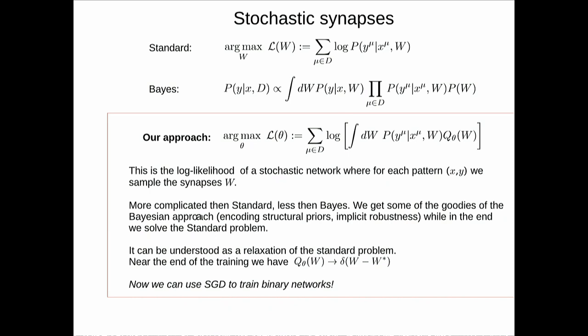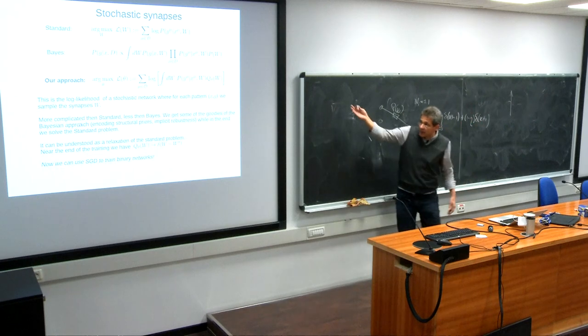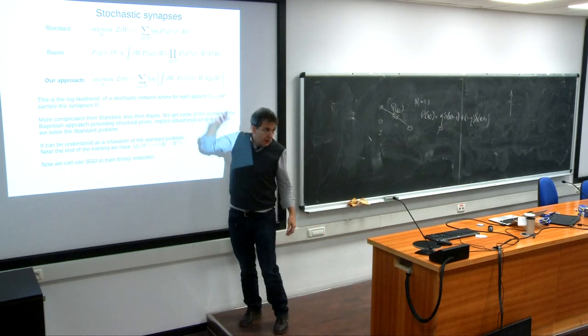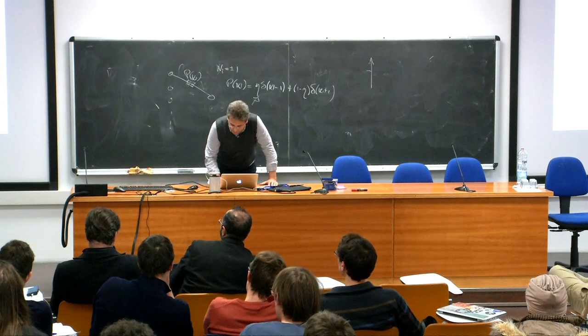What you would like to do is find a w that maximizes the probability of getting the right answer at the output. You can write this in a Bayesian context: make an assumption about the probability distribution of the weights and maximize the likelihood under this assumption. The cost function is essentially the log likelihood related to the probability that the weights give the right answer.